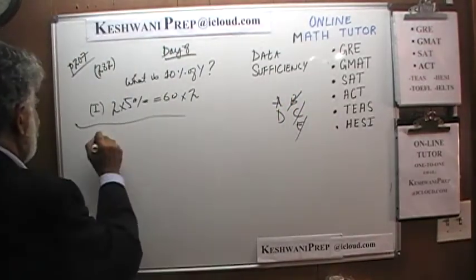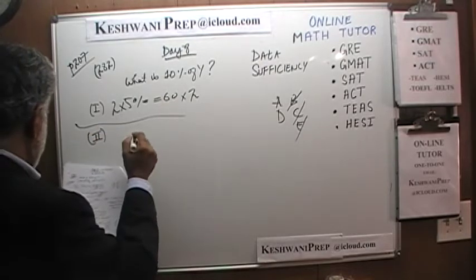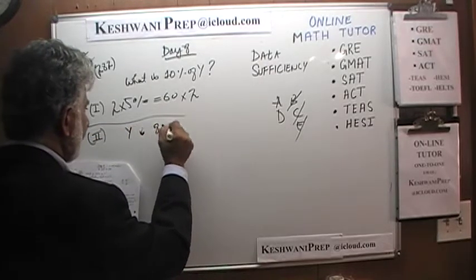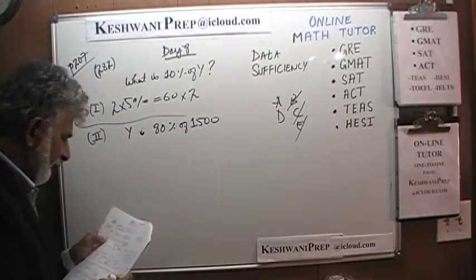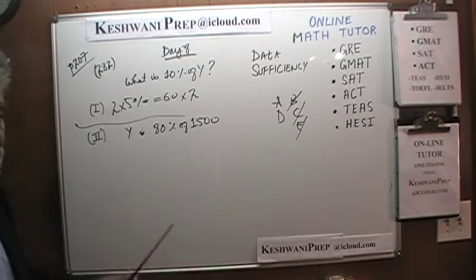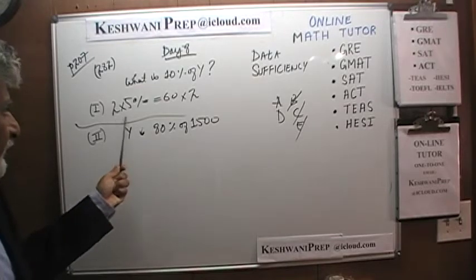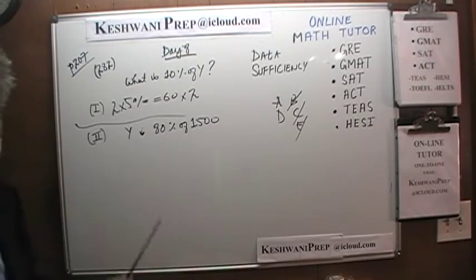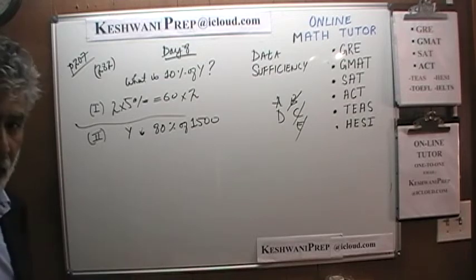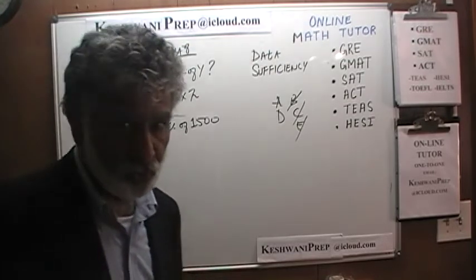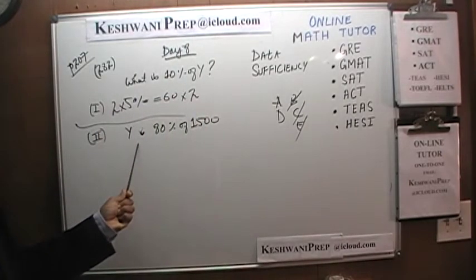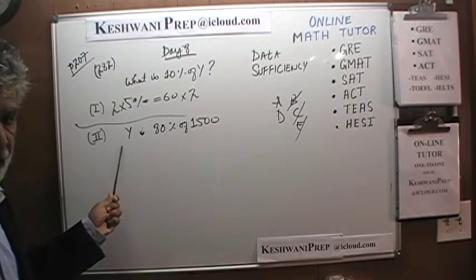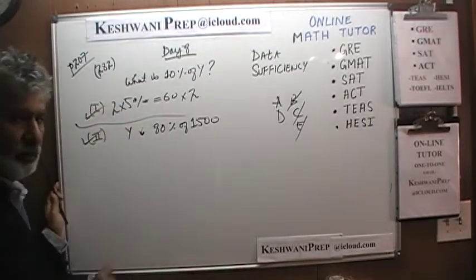Let's look at the second statement. The second statement tells us that Y is 80% of 1500. If we know that Y is 80% of 1500, obviously we can figure out Y. And once we figure out Y, we can figure out the 10%. The second statement by itself is also sufficient. The answer is D.